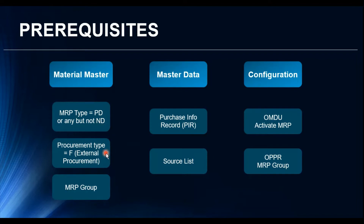The procurement type of the material should be F, which means external procurement. With this indicator the system understands that it has to create a purchase requisition for the demand, and not a planned order for in-house manufacturing. We do also create planned orders for external procurement, but those planned orders are later converted into purchase requisitions — that's a different topic for another video.